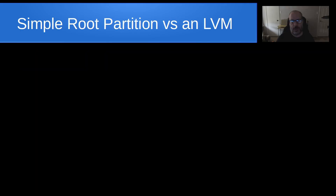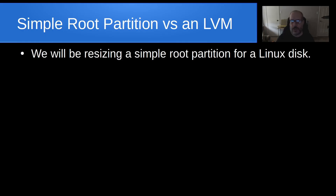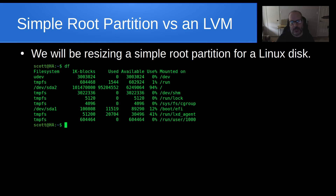First of all, we have the concept of a simple root partition versus an LVM. We will be resizing a simple root partition for a Linux disk. And as mentioned earlier, if your requirement is to resize an LVM, look at my older video, which I'll link in the show notes. This is an example of a simple root partition. Here we're looking at the structure of the disk on this Home Assistant configuration, which happens to be an Incus Virtual Machine. Notice that /dev/sda2 happens to be the root partition, and it is 94% full.